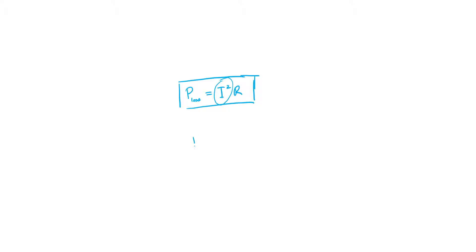For a constant power, current and voltage tend to be inversely proportional. If we increase the voltage, we decrease the current. And this is exactly what we do when we transmit electricity.